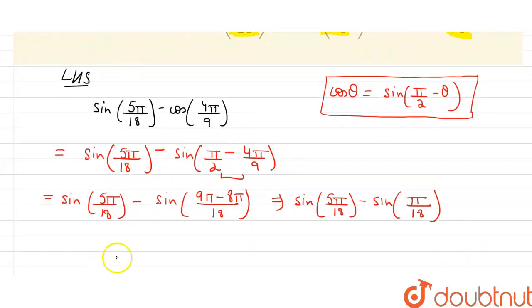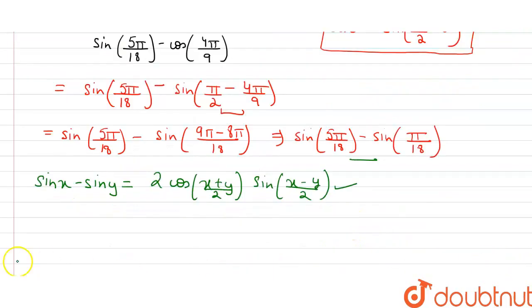Now we know a trigonometric formula that is, sin x minus sin y equals 2 cos (x + y)/2 into sin (x - y)/2. So we will apply this formula in this equation.